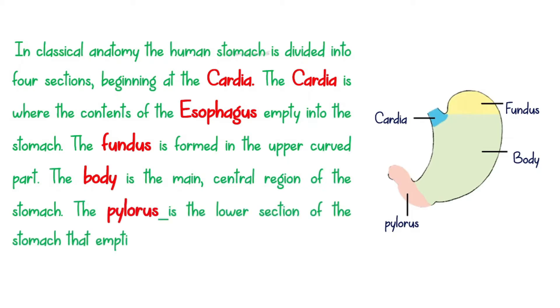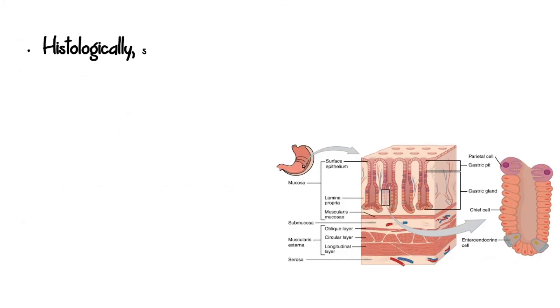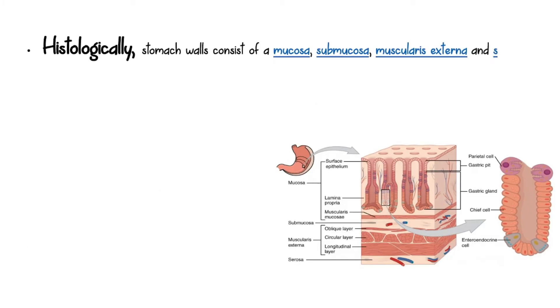The pylorus — from Greek 'gatekeeper' — is the lower section of the stomach that empties contents into the duodenum. Histologically, stomach walls consist of a mucosa, submucosa, muscularis externa, and serosa.